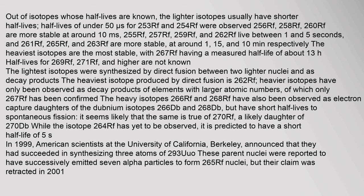Out of isotopes whose half-lives are known, the lighter isotopes usually have shorter half-lives. Half-lives of under 50 microseconds were observed for 253Rf and 254Rf. 256Rf, 258Rf, and 260Rf are more stable at around 10 ms. 255Rf, 257Rf, 259Rf, and 262Rf live between 1 and 5 seconds. 261Rf, 265Rf, and 263Rf are more stable at around 1, 15, and 10 minutes respectively. The heaviest isotopes are the most stable.